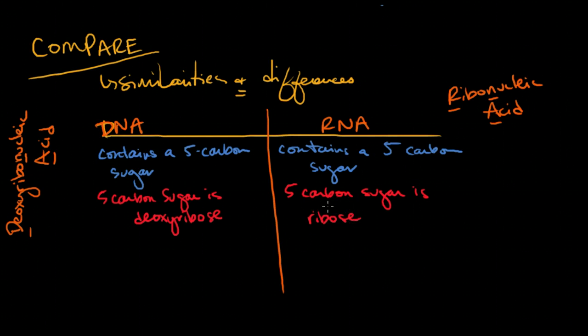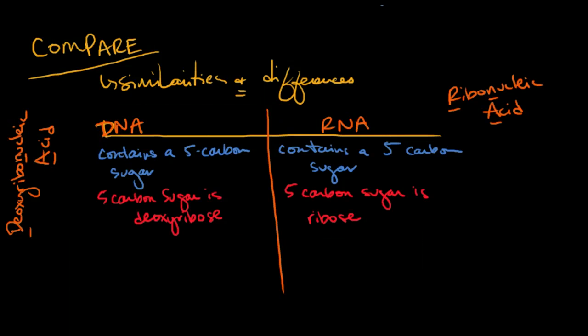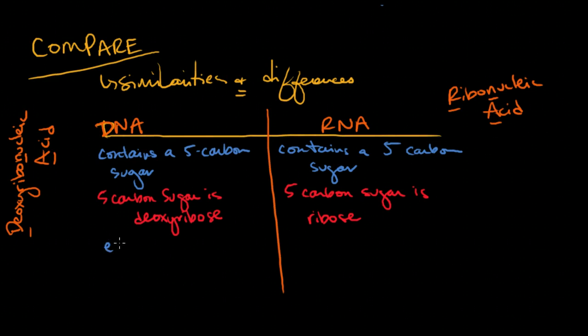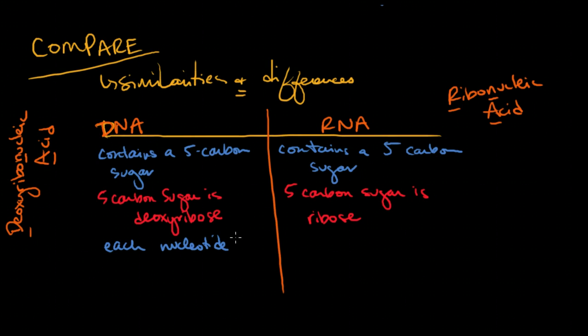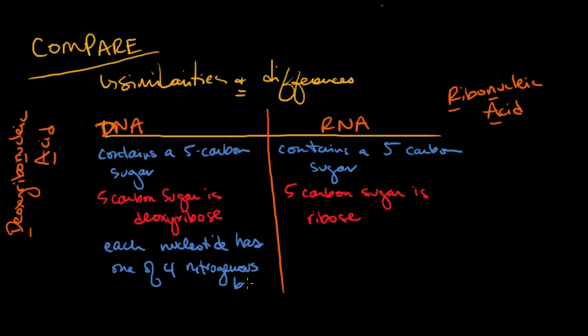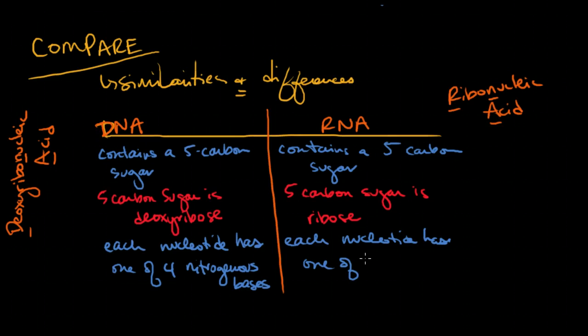So the 5-carbon sugar for RNA is ribose. Now, fortunately, you already know what ribose looks like. You have to be able to identify that. So you've already committed that to memory, right? You should know that for DNA, that each nucleotide, or each monomer, that's what we call a monomer, a nucleic acid is a nucleotide. So each nucleotide has one of four possible nitrogenous bases.